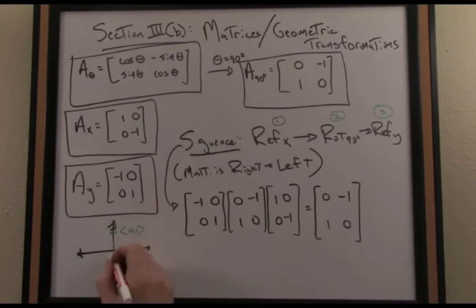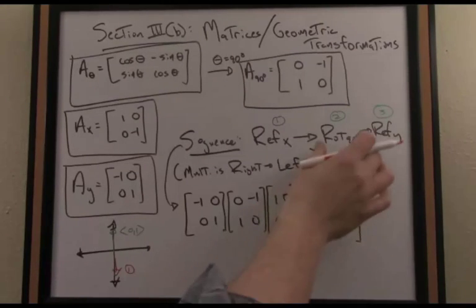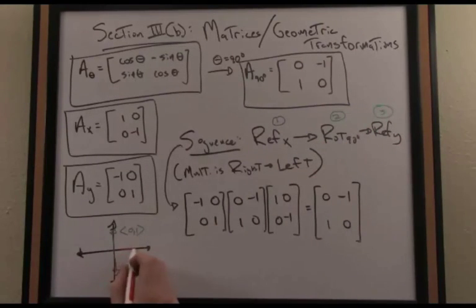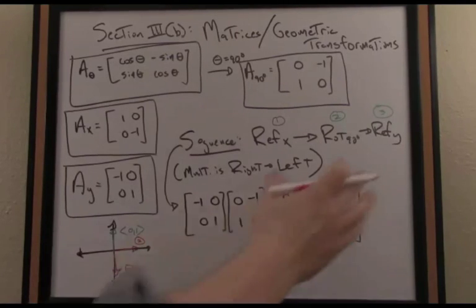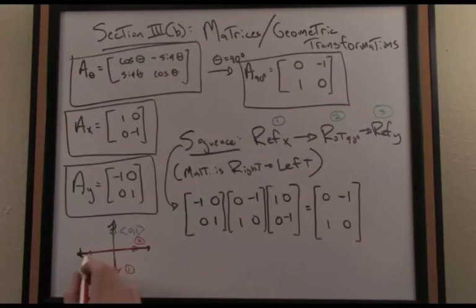So if I reflect about the x-axis after step 1 in this sequence, I wind up here. Then I'm going to rotate counter-clockwise 90 degrees, so that'll put me here on the x-axis at step 2. And then lastly, if I reflect about the y-axis at step 3, there's my final result. I end up with the vector negative 1, 0.